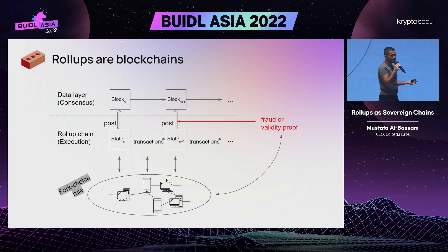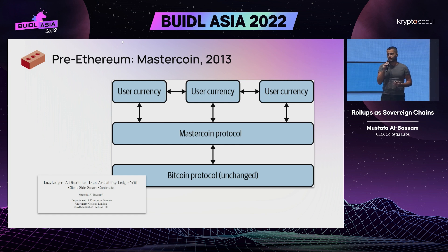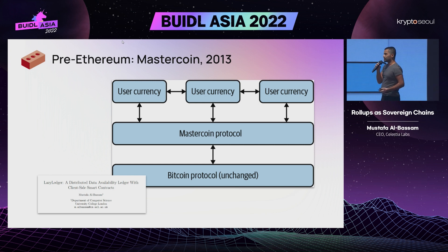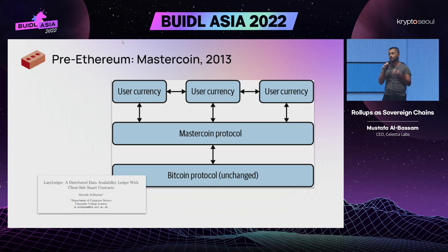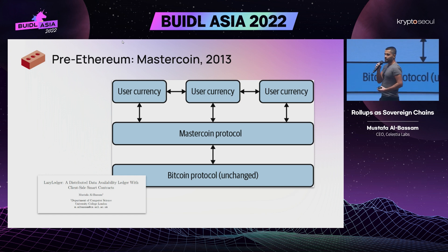What that fundamentally gives you is the ability to create your own chain without needing to bootstrap your own new consensus network or proof-of-stake network from scratch, because your new rollup chain is already inheriting the consensus and security of the chain it posts its block data to. But other than that, it's pretty much a standard blockchain. This is very similar to MasterCoin — what Tether is based on — which allowed you to develop applications on top of Bitcoin using Bitcoin as a data layer but defining your own off-chain execution rules.